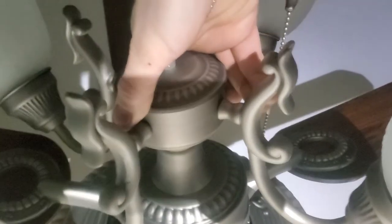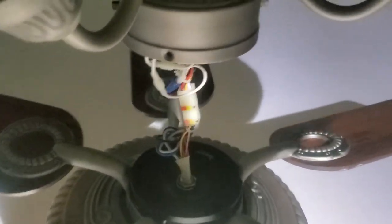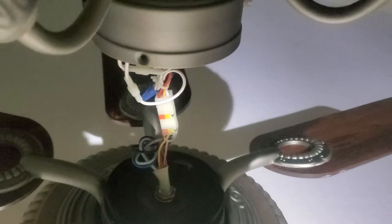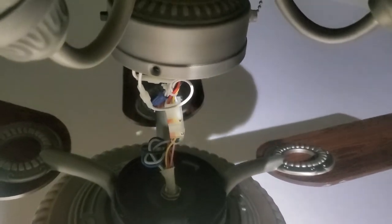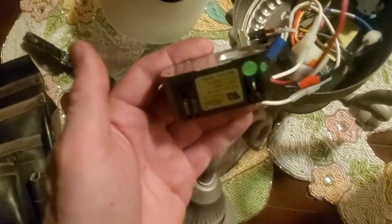Once you remove those screws, the whole thing just drops right down, and there's a simple little connection that you can unplug. Take the whole light down to the ground so it's easier to work on.